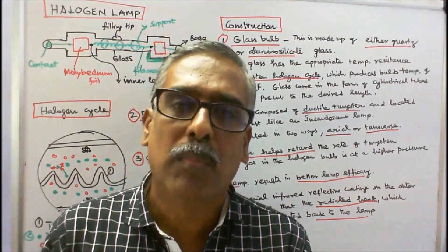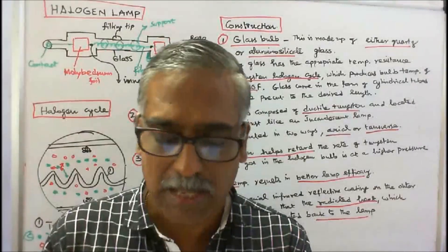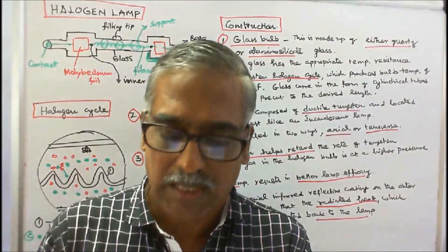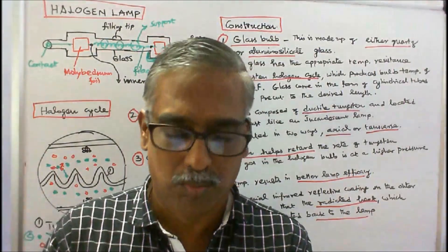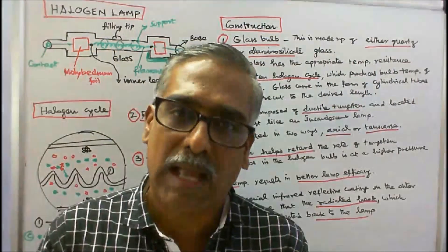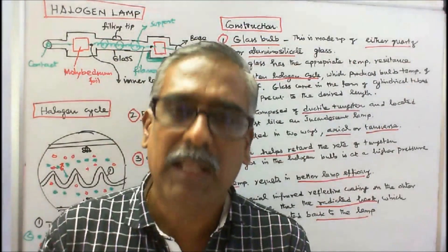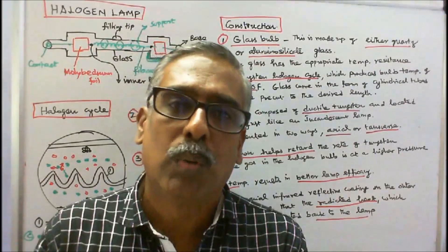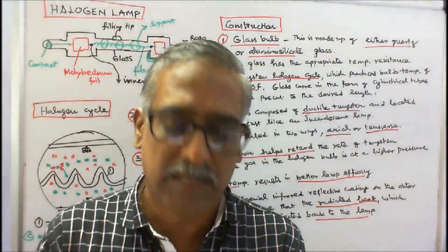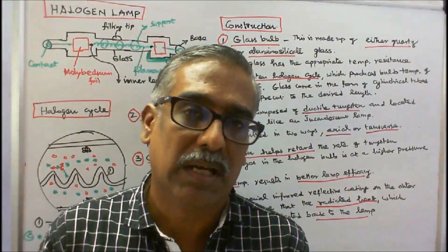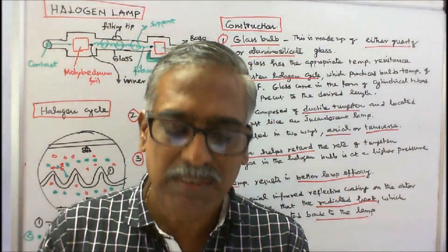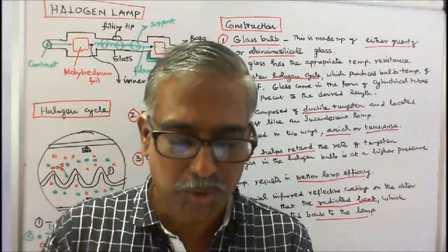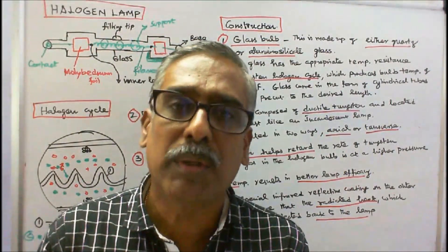The main problem in the tungsten filament incandescent lamp is that evaporation from the hot filament condenses on the cooler inside bulb wall, causing the bulb to blacken. This blackening process continuously reduces the light output over the life of the lamp. This problem gave birth to the halogen lamp, which uses a halogen gas in order to increase both light output and rated life.